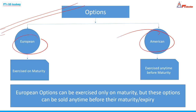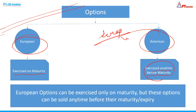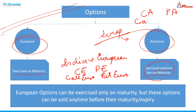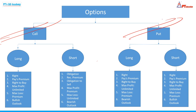Next we come to options. Options are of two types: American options and European options. European options can be exercised only at maturity. American options can be exercised anytime — not just at maturity, but before maturity as well. When maturity arrives, the American option expires. In India, European options are used — that's why in any option contract script you will see 'CE' or 'PE' at the end: CE means Call European and PE means Put European. In American options, it would be CA (Call American) and PA (Put American).